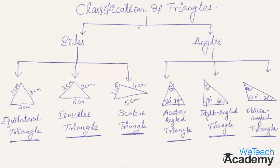Hence, the classification of triangles is based on sides and angles. According to sides, they are classified into three types: equilateral, isosceles, and scalene. According to angles, triangles can be classified into three types: acute angle triangle, right angle triangle, and obtuse angle triangle.